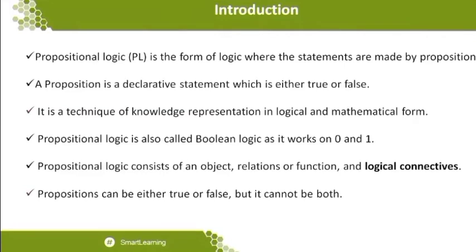The fourth point: proposition logic is also called boolean logic, as it works on zero and one. When logic comes in, we expect this boolean of zero and one. Proposition logic consists of objects and gives relations between one kind of statement and another, or we can go for logical connectivity. What is the meaning of logical connectives? If one statement is true and another is false, what is the output?